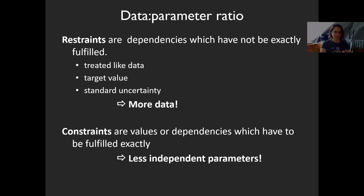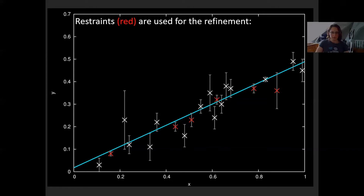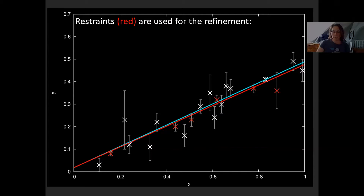You need to know some kind of target value — some condition you want to fulfill. Restraints are treated like data, so depending on how certain you are that they must be fulfilled, you can give them a standard uncertainty, and they generally increase the number of data you have. Constraints are values or dependencies which have to be fulfilled exactly, meaning you get fewer independent parameters. Restraints have an uncertainty as well and are technically treated as additional data points, which improves your model.